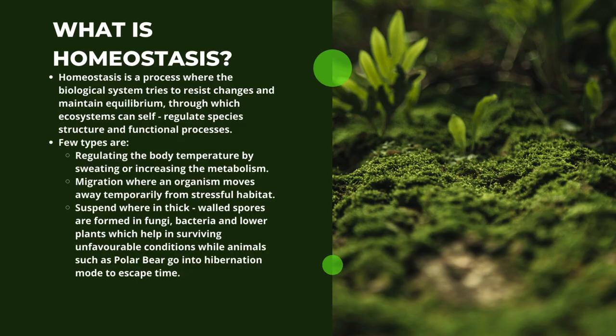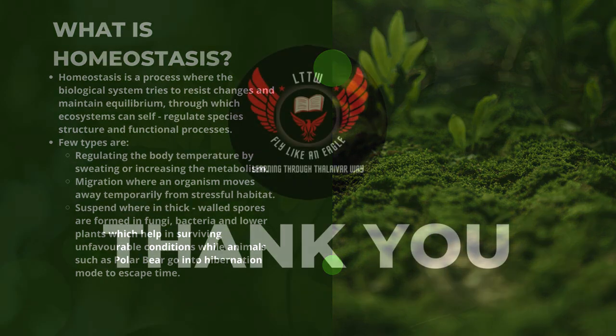Now let us learn what homeostasis is about. Homeostasis is a process where the biological system tries to resist changes and maintain equilibrium, through which ecosystems can self-regulate species structure and functional processes. A few types include: regulating body temperature by sweating or increasing metabolism; migration, where an organism moves away temporarily from a stressful habitat; and suspension, where thick-walled spores are formed in fungi, bacteria, and lower plants to survive unfavorable conditions, while animals such as polar bears go into hibernation mode.